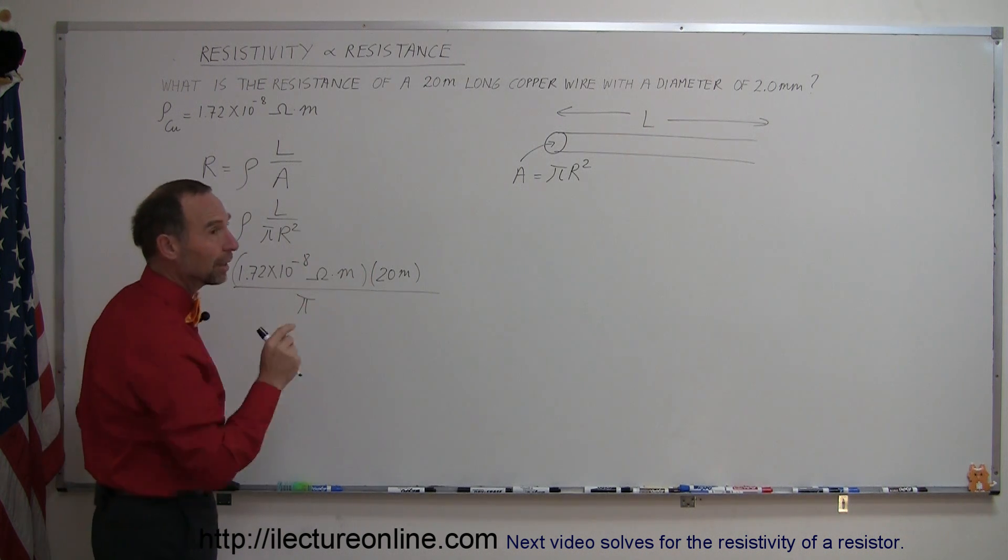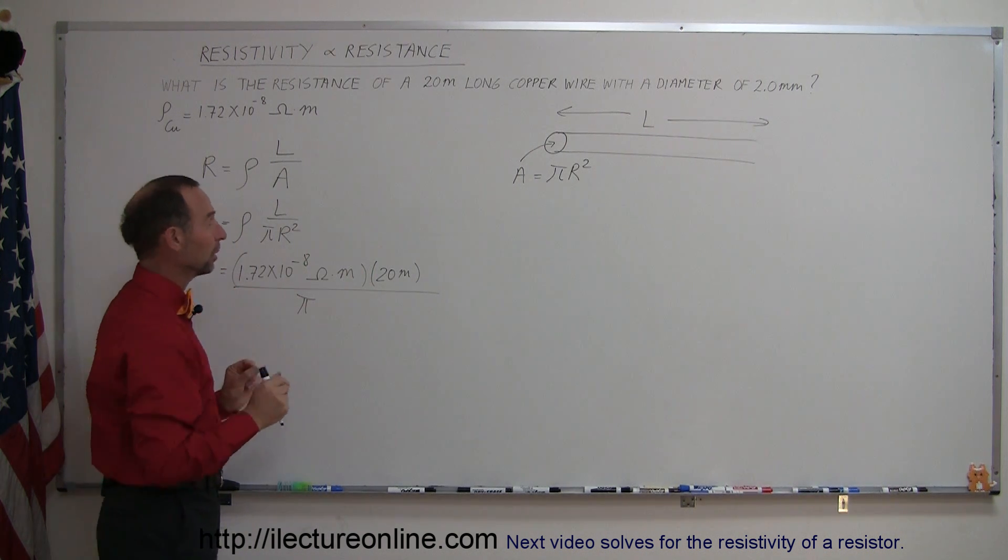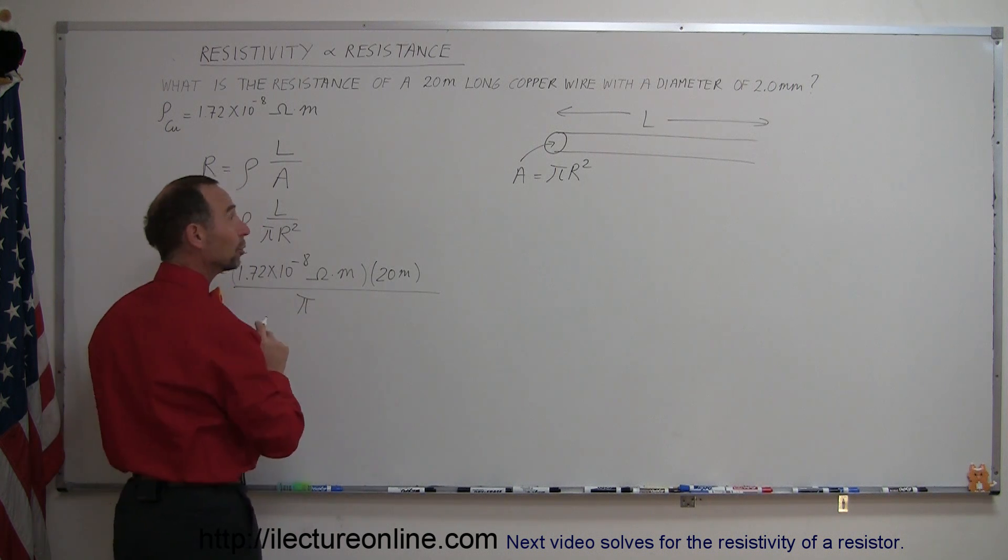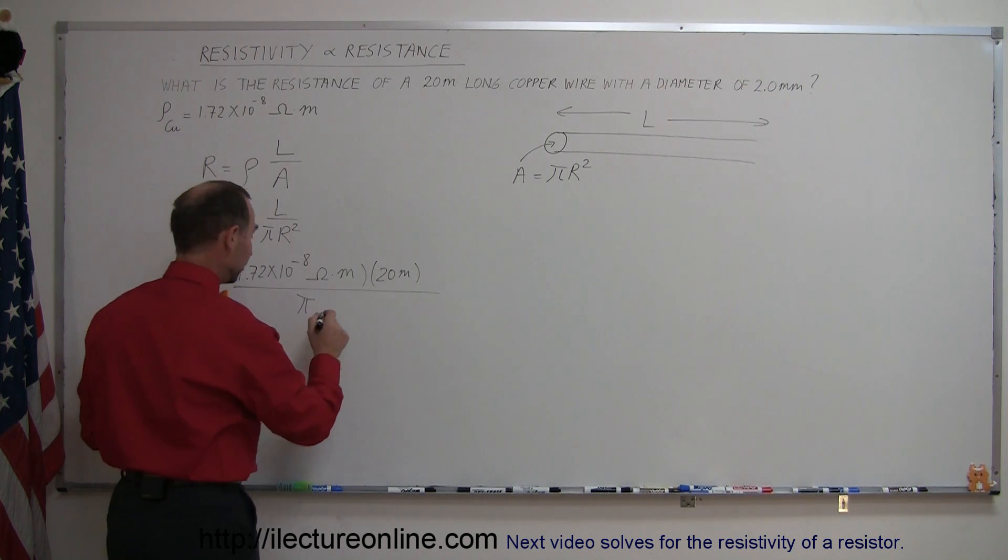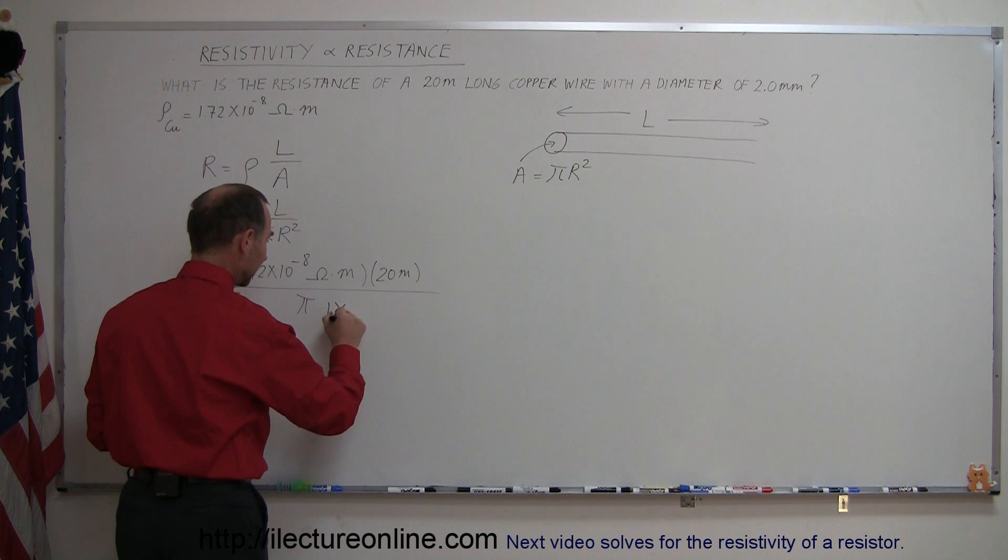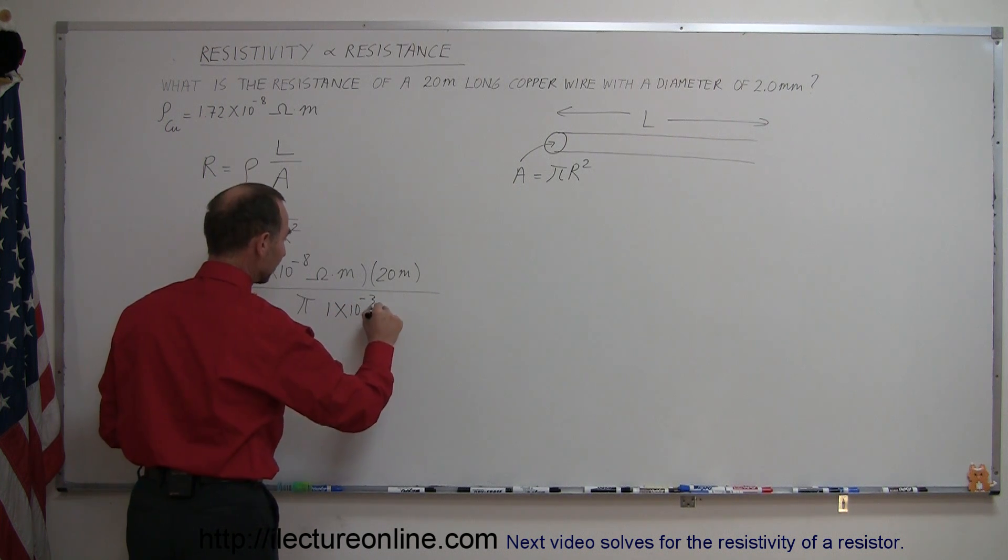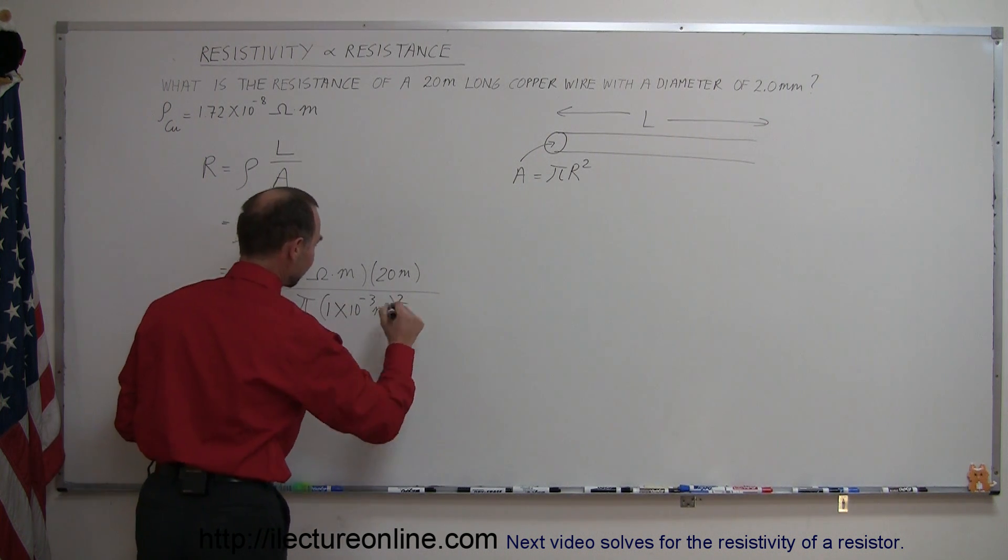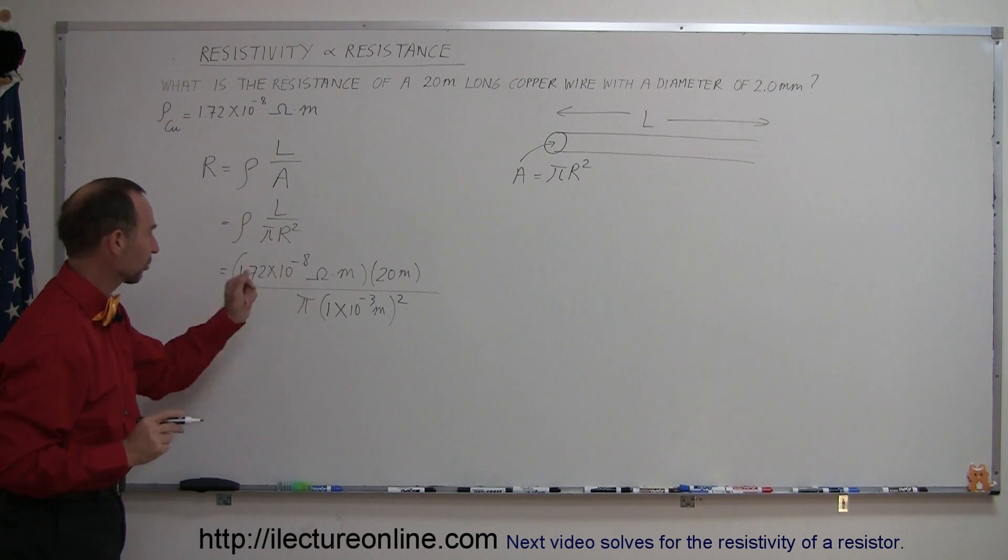We have a diameter of 2 millimeters, so the radius is half of that, 1 millimeter. We need to convert that to meters: 1 millimeter is 1 × 10⁻³ meters. Then we square that.